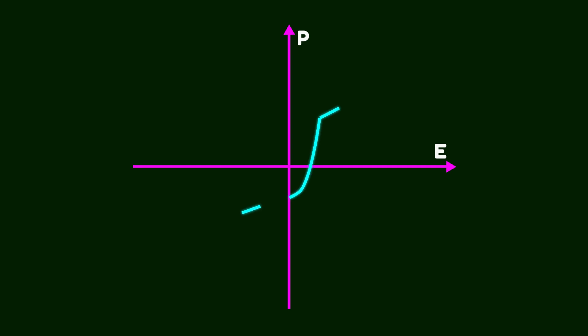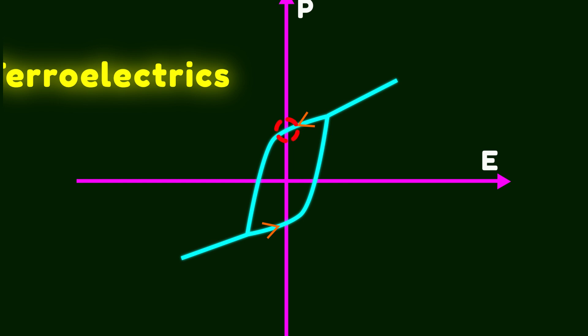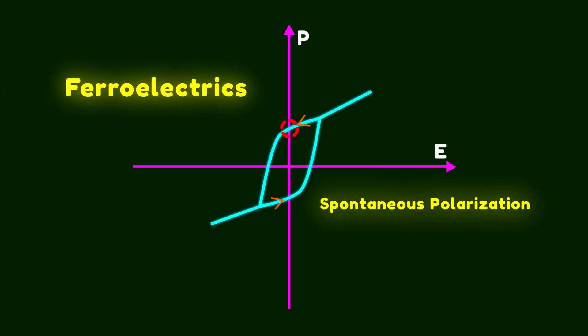There is also another class of materials known as ferroelectrics. Like paraelectrics, these materials also show non-linear behavior. However, their unique feature is that even when the applied field is reduced to zero, a finite polarization still remains. This property is known as spontaneous polarization. Let's now elaborate on this diagram in more detail.